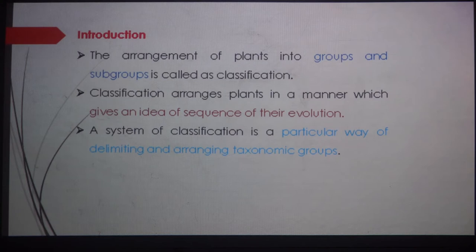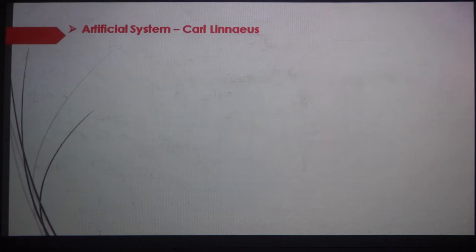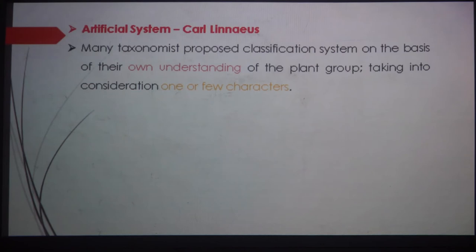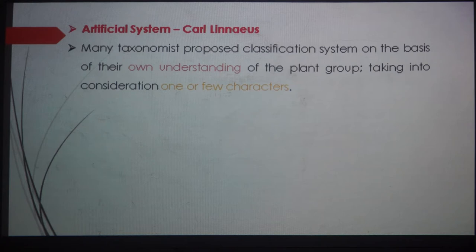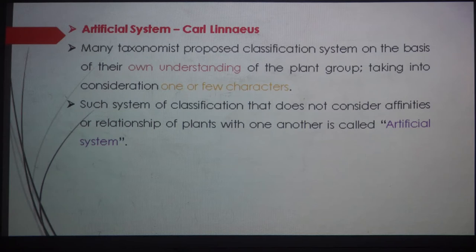Now about the artificial system — what is exactly the artificial system? This system was proposed by Carolus Linnaeus. Many taxonomists propose classification systems on the basis of their own understanding of plant groups, taking into consideration only one or few characters. This artificial system is an earlier, or the oldest, type of classification system where the botanist considers any plant character based on their own understanding, taking into consideration only one or two morphological characters. Such a system that does not consider the affinities or relationships of plants with one another is called the artificial system of classification.